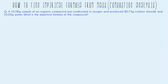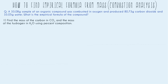We're going to find the answer by doing a series of steps. Step one is to find the mass of carbon in the CO₂ and the mass of hydrogen in the H₂O using percent composition. When it says we have 33.08 grams of an organic compound, that means it's going to contain carbon, hydrogen, and possibly oxygen. I've put X, Y, and Z here because we don't know how many carbons, hydrogens, and oxygens we have — that's the whole purpose of this problem.